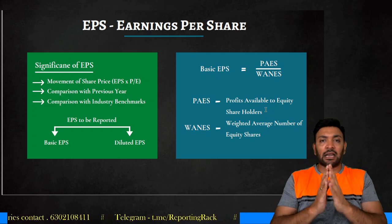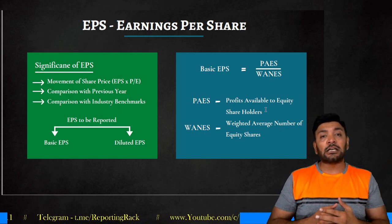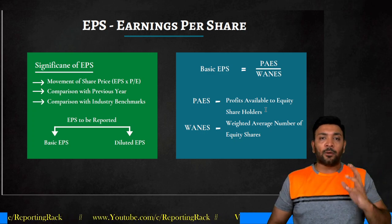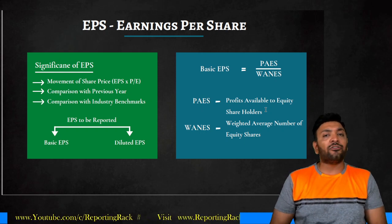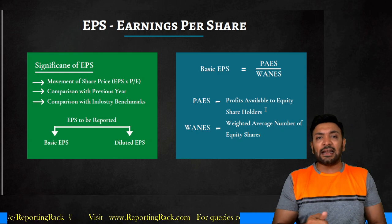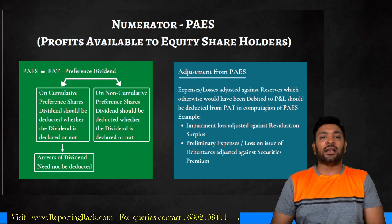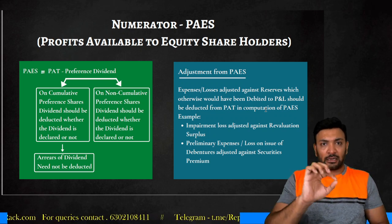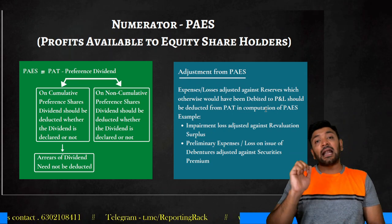Before getting into complex computation, let me focus on what PAS and WNES are. PAS is the numerator and WNES is the denominator. PAS is one of the easiest to calculate; WNES is slightly tricky. Profits available to equity shareholders is the profit after payment of interest, after payment of tax, and after payment of preference dividend.